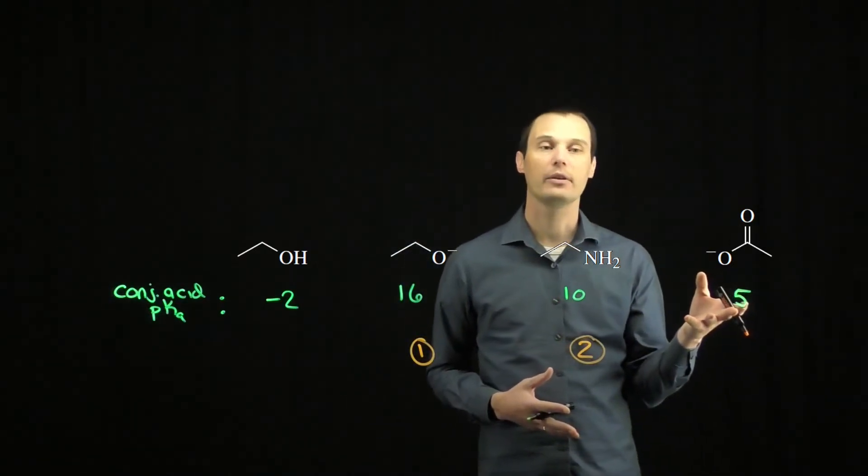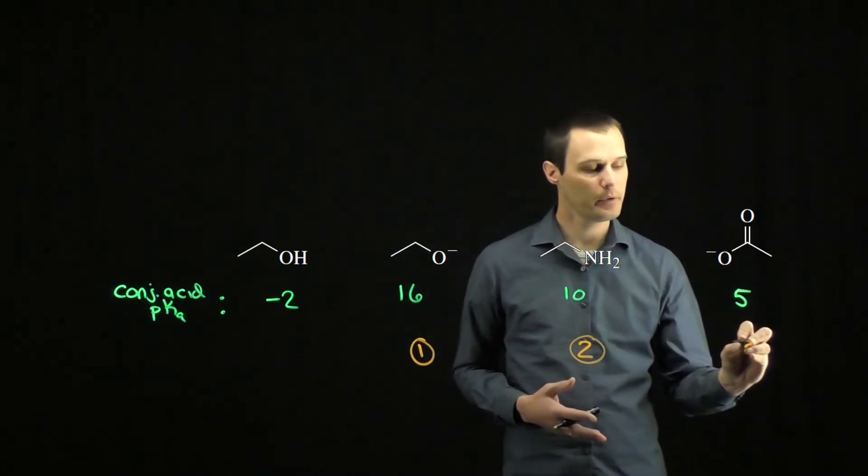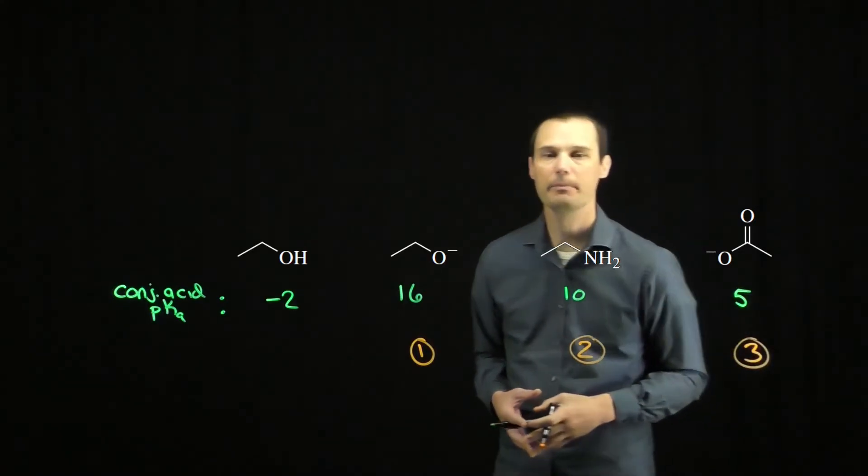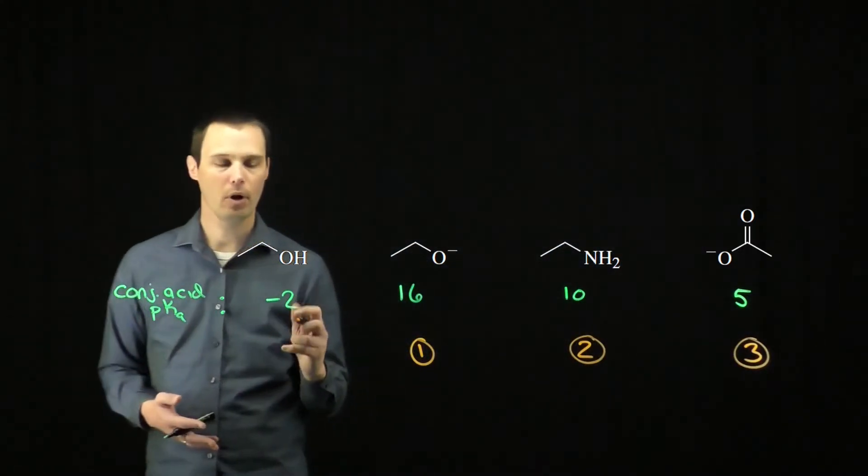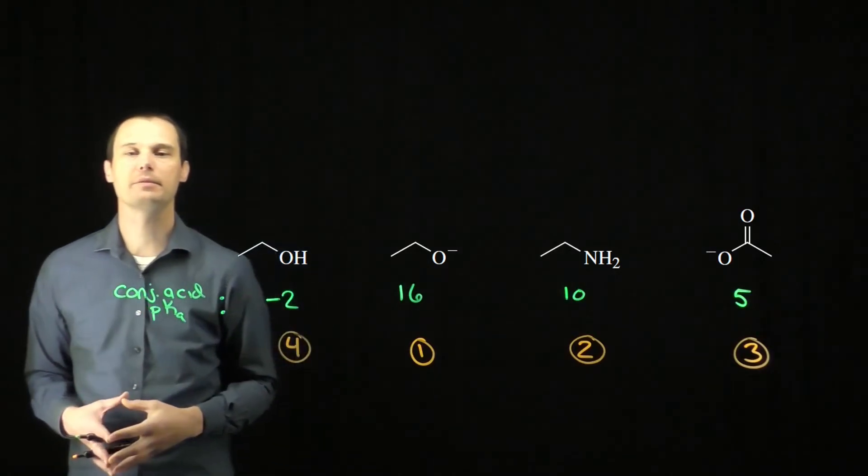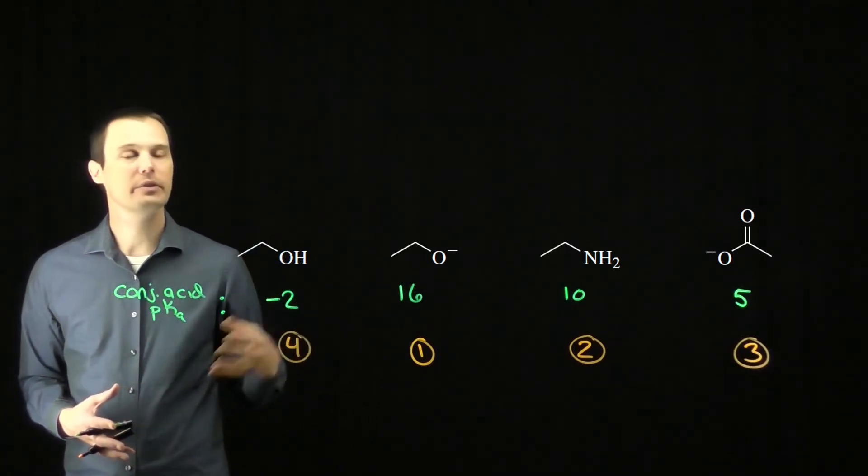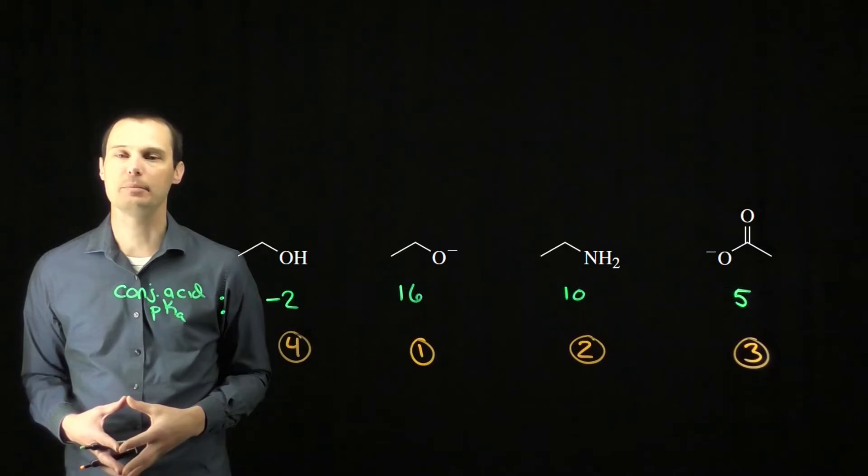The next in this list would be 5 for the carboxylic acid, which means our carboxylate would be the third most nucleophilic. And finally, the neutral alcohol will be the number four weakest nucleophile in this list. This is how we can rank a series of nucleophiles according to their conjugate acid pKa.